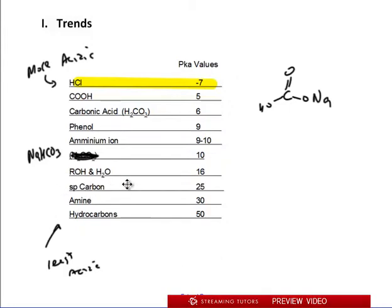SP carbon is an alkyne. So if it's a carbon, triple bond carbon with an H. So this is the trend that you should know in your general numbers. That's the first thing you have to understand is who's acidic and who's more than others.